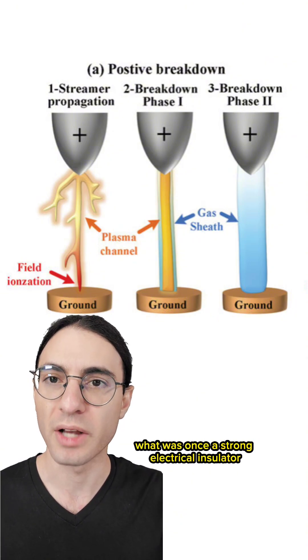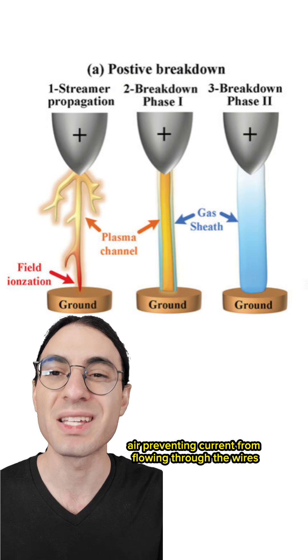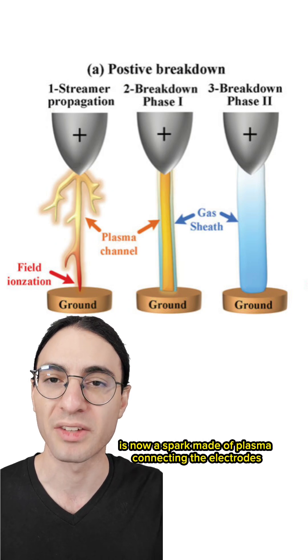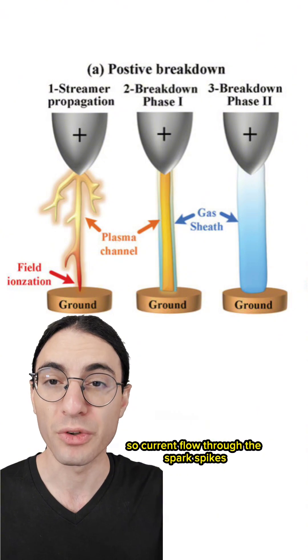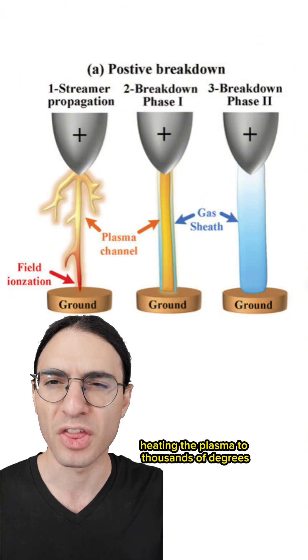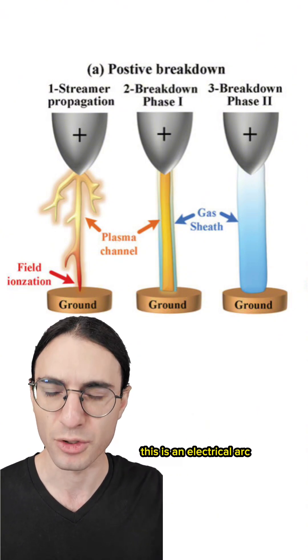What was once a strong electrical insulator, air, preventing current from flowing through the wires, is now a spark made of plasma connecting the electrodes. And those conduct electricity extremely well. So current flow through the spark spikes, heating the plasma to thousands of degrees. This is an electrical arc.